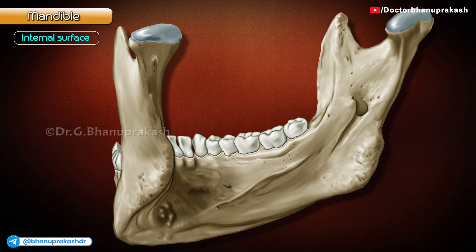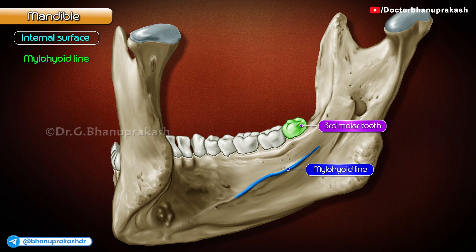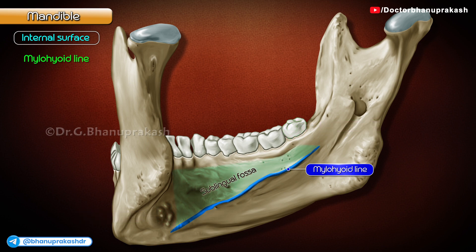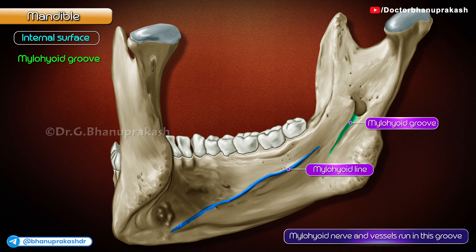The internal surface of the body presents the following features. Mylohyoid line: this is a prominent oblique ridge that runs obliquely downwards and forwards, from behind the third molar tooth till the symphysis menti, below the genial tubercles. The mylohyoid line divides the inner surface of the body into a sublingual fossa, which lies above the line, and a submandibular fossa, which lies below the line. Mylohyoid groove: this lies below the posterior end of the mylohyoid line, and the mylohyoid nerve and vessels run in this groove.